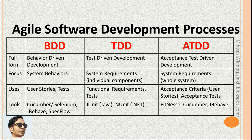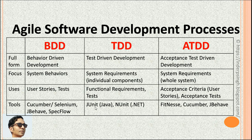TDD — Test Driven Development — focuses on system requirements and writing code so that it is simple to test the individual components. In Test Driven Development versus Behavior Driven Development, TDD uses functional requirements and tests. The common testing tools are different: in TDD, the common testing tools are JUnit for testing Java applications or NUnit for testing .NET applications.